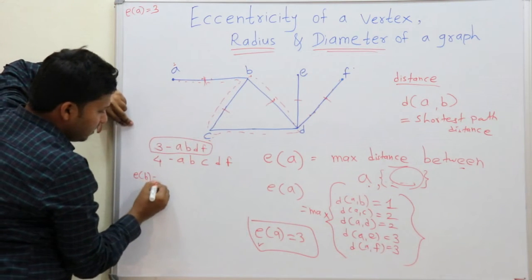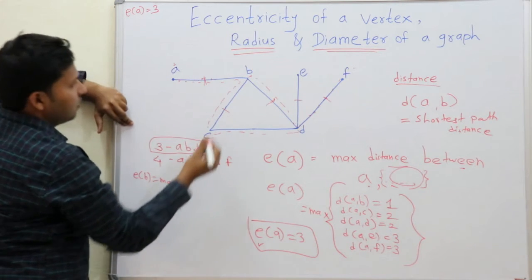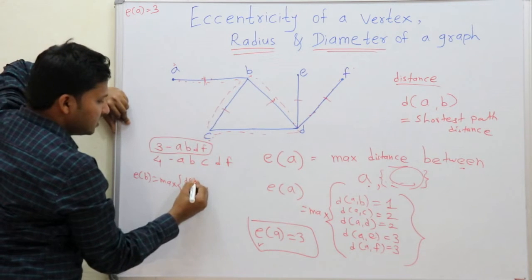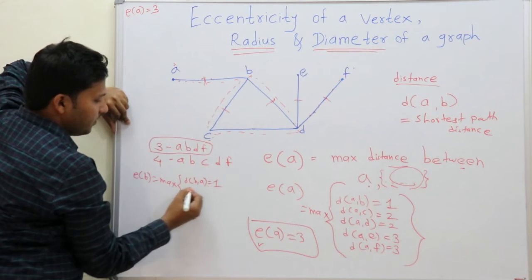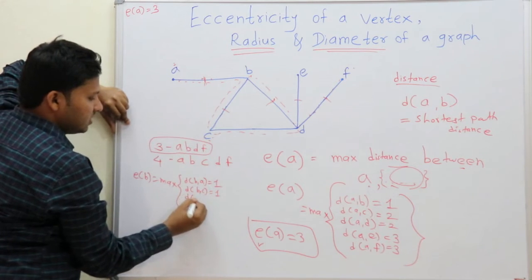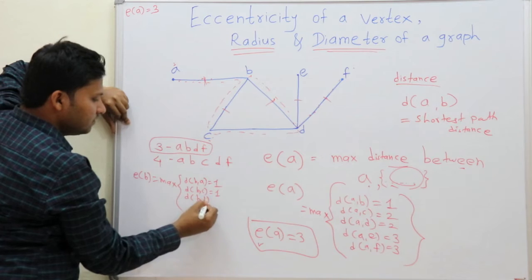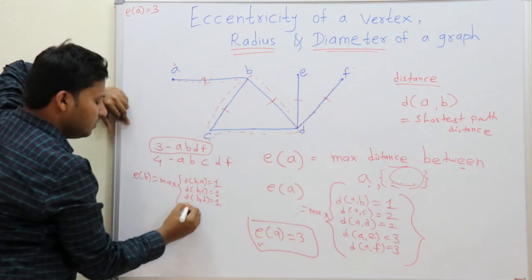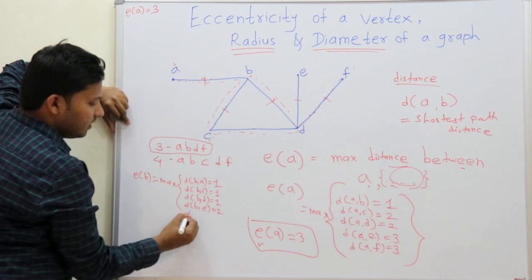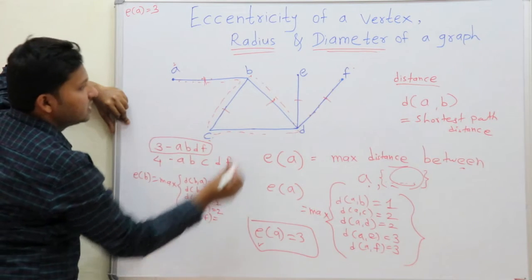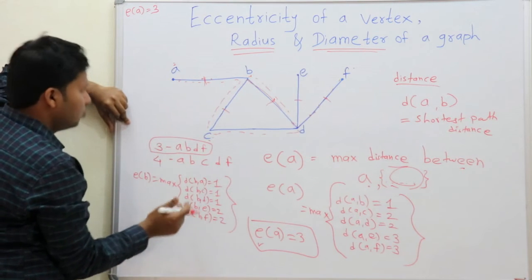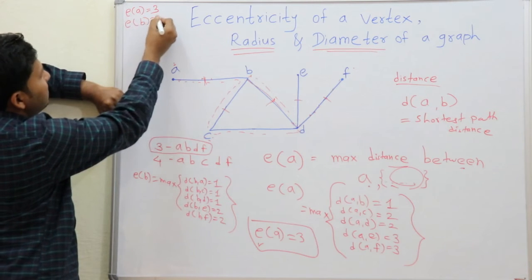Let us find out the eccentricity of B. We take the maximum of the distances from B to all other vertices. Distance B to A is 1, B to C is 1, B to D is 1, B to E is 2, and B to F is 2. The maximum distance is 2, so the eccentricity of B is 2.